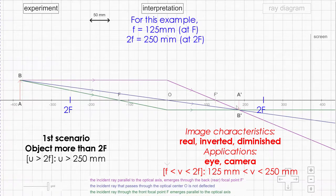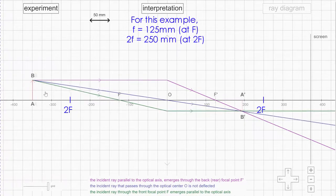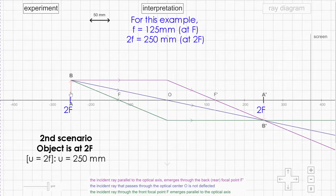The second scenario: if I have to shift the object nearer until a point where it's exactly at 2f, two times the focal length, 250mm in this case. This is where I told you that the theory is important because when the object is exactly at 2f, you must know that the image must be exactly at 2f, two times the focal length also.